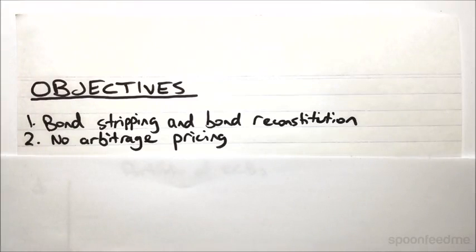So we're going to look at these ideas of bond stripping and bond reconstitution and then the idea of no arbitrage pricing, which is actually a really powerful idea in finance that's really important.